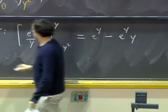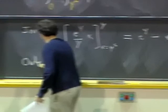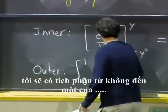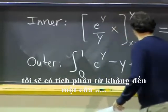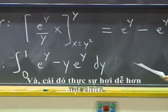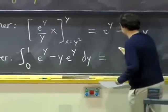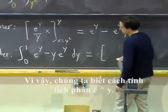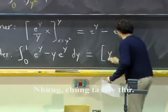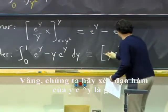OK, so now if I do the outer integral, I will have the integral from zero to one of e to the y minus y e to the y dy. And that one actually is a little bit easier. So we know how to integrate e to the y. We don't quite know how to integrate y e to the y, but let's try.